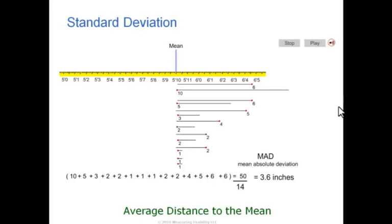This is called the mean absolute deviation, MAD. It's not used as much in statistics but it does get us closer to what we're looking for, this average difference each value is.